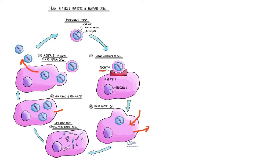Viruses are specific: the polio virus affects the motor neurons of the spinal cord, while the hepatitis virus affects the liver cells and causes hepatitis, which is an infection of the liver.